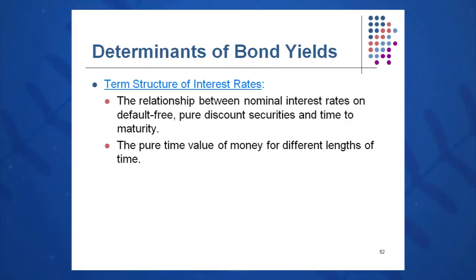There are three different components in what we'll call the term structure of interest rates — the relationship between total interest rates on default-free, pure discount securities, and time to maturity (TTM).